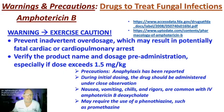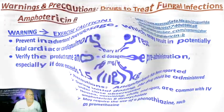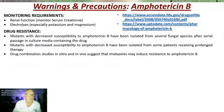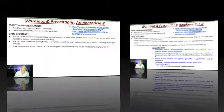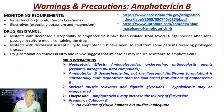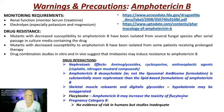Nausea, vomiting, chills, and rigors may require the use of a phenothiazine such as promethazine. It is especially critical to monitor serum creatinine, potassium, and magnesium. Serious drug interactions include nephrotoxic effects. The non-liposomal formulation — amphotericin B deoxycholate — is far more nephrotoxic than the lipid-based formulation. There are drug interactions with skeletal muscle relaxants, digitalis glycosides, and flucytosine; amphotericin B can increase the toxicity of flucytosine.